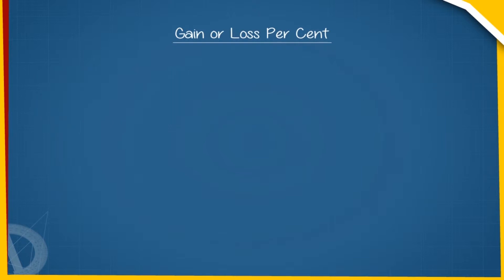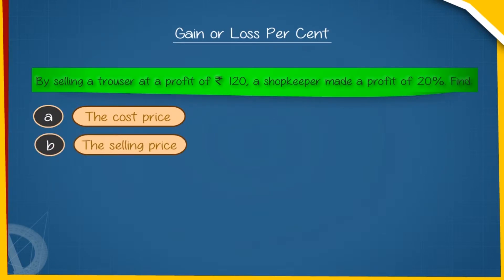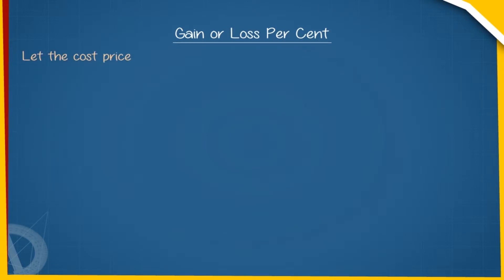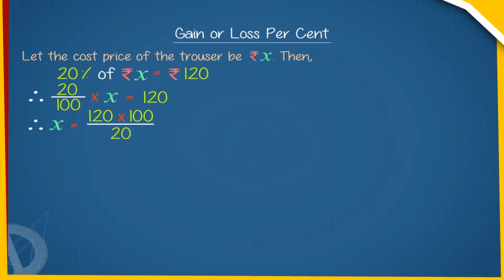Let us consider a problem. By selling a trouser at a profit of Rs. 120, a shopkeeper made a profit of 20%. Find: (a) the cost price and (b) the selling price. Let the cost price of the trouser be Rs. X. Then, 20% of Rs. X equals Rs. 120. Therefore, 20 upon 100 into X equals Rs. 120. Therefore, X equals 120 into 100 divided by 20 equals Rs. 600. Thus, the cost price of the trouser is Rs. 600.